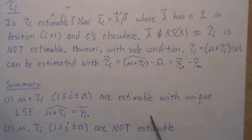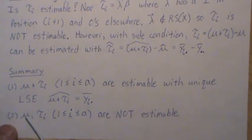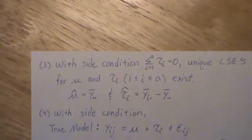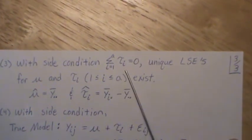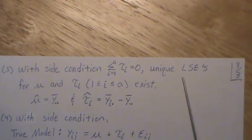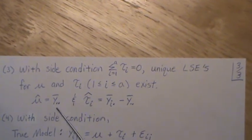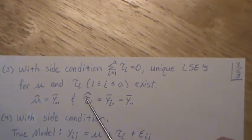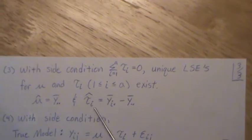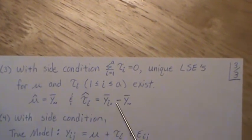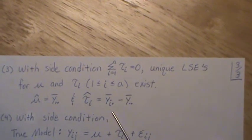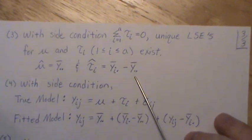In summary, μ + τᵢ are estimable with unique least squares estimate ȳᵢ·. Now, μ and τᵢ are not estimable. But with the side condition that the τᵢ's sum to 0, then a unique least squares estimate for μ and τᵢ exists. And it's represented by this. That's the sample grand mean.